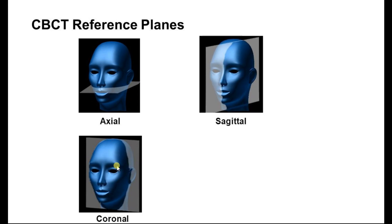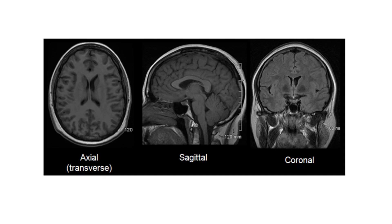For example, the coronal plane — we are moving from the back of the head to the nose. And the axial plane, we are moving from the chin up, from the chin to the top of the head. This is an example: axial view, sagittal view, coronal view.